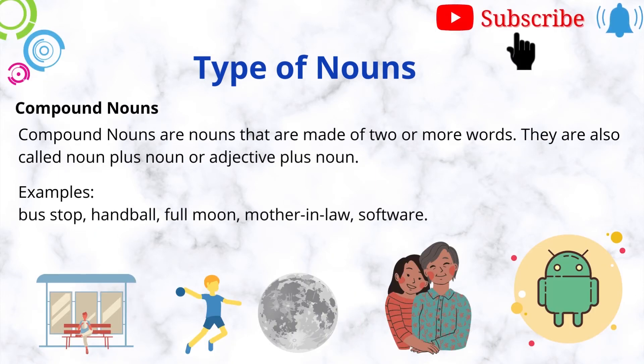Compound nouns are nouns that are made of two or more words. They are also called noun plus noun or adjective plus noun. Examples: bus stop, handball, full moon, mother-in-law, software.